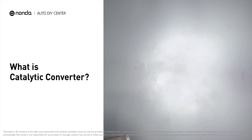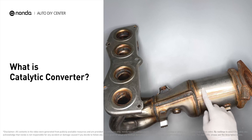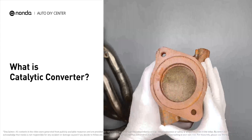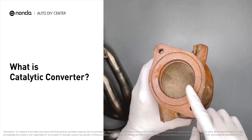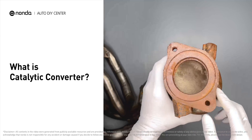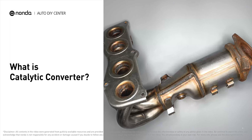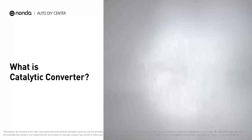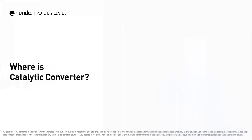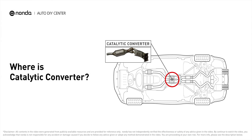A catalytic converter is an exhaust emission control device that consists of a stainless steel shell which encloses a ceramic honeycomb core. This provides the catalyst and changes harmful substances in a car's exhaust gas into less harmful ones like carbon dioxide and water vapor by means of chemical reactions. Catalytic converters are usually located in a box on the exhaust pipe under your car.